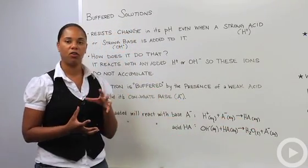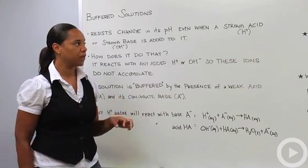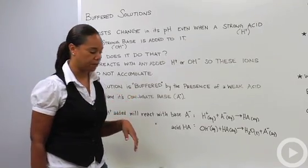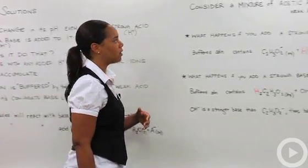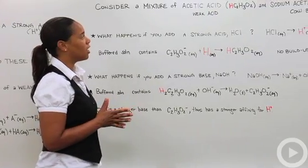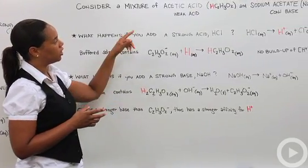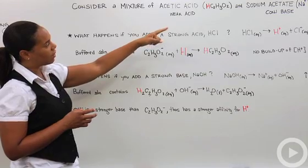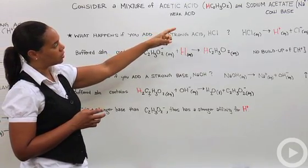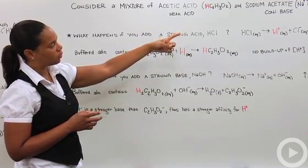So this allows your solution to be what we call buffered. Let's do a more in-depth example of that. Let's consider a mixture of acetic acid, which is HC2H3O2, and sodium acetate, which is NaC2H3O2.